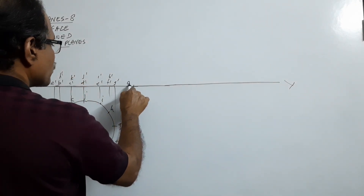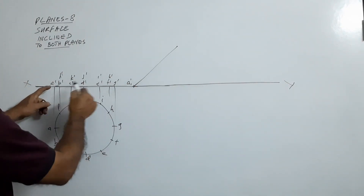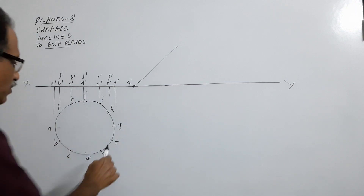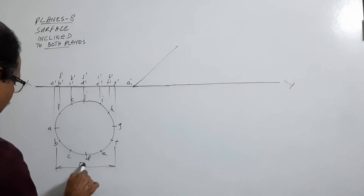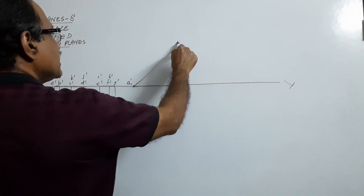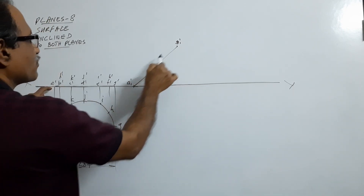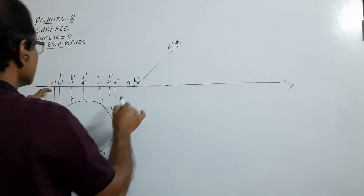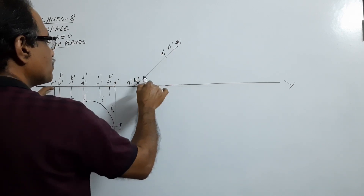Take a point anywhere on XY, call it A-dash. Make a 40-degree line. The diameter of the circle is 50mm. Take the distance A-dash to G-dash, that is 50mm. Mark the elevation length to get G1-dash. From G1-dash, mark downwards to get F1-dash.